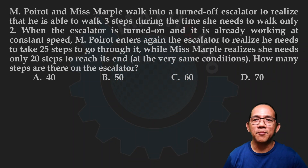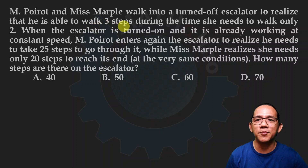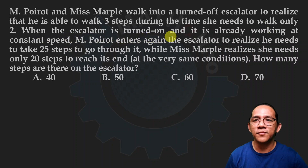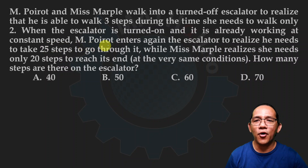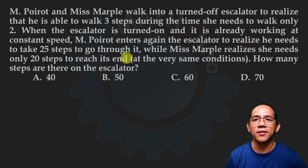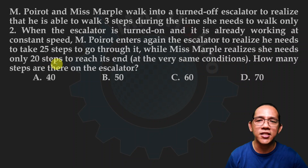M. Poirot and Ms. Marple walk into a turned-off escalator to realize that he is able to walk three steps during the time she needs to walk only two. When the escalator is turned on and working at constant speed, M. Poirot enters the escalator again to realize he needs 25 steps to go through it, while Ms. Marple realizes she needs only 20 steps to reach its end.